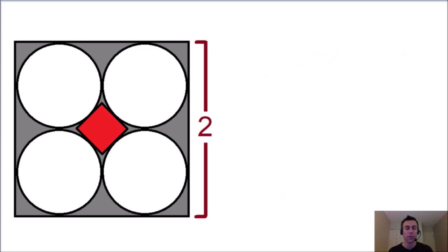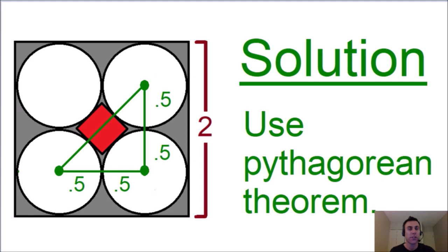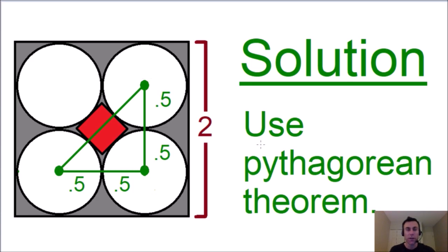I thought the best solution to this problem was found by using the Pythagorean theorem. So let's use the Pythagorean theorem to solve this problem. What I'm going to do is create a right triangle that has vertices in the center of three of the circles. Notice how all three of the vertices of this right triangle are in the center of the circles, and we can find out a lot of information from the circles.